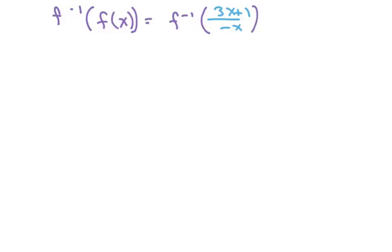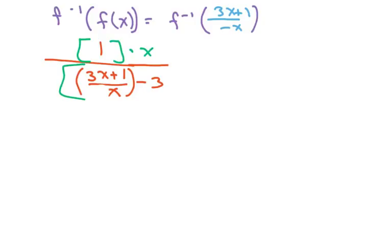So f inverse happens to be 1 over negative 3x plus 1 over negative x minus 3. Now, these two negatives right here are going to cancel. Two negatives make a positive.